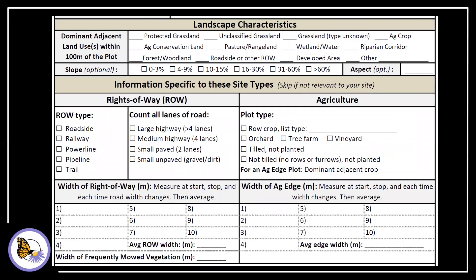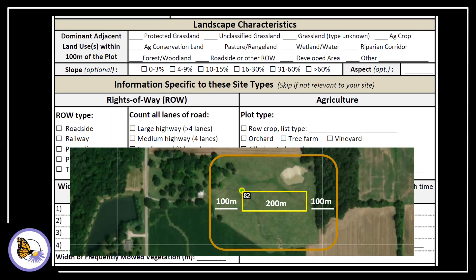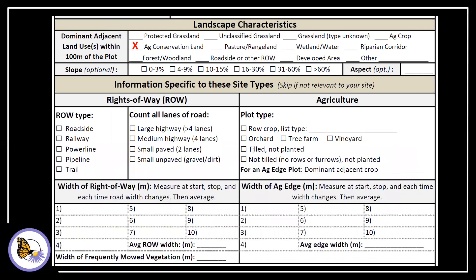In the middle of the first page, record the dominant adjacent land use. Consider only what is within 100 meters of the plot — use the size of your plot for reference. Imagine a 100-meter buffer around the plot itself. We see that most of the land within the buffer is still part of the agricultural field, so we mark agricultural conservation land. You may select more than one. Next are two optional fields: slope and aspect. Fill those out if you'd like.